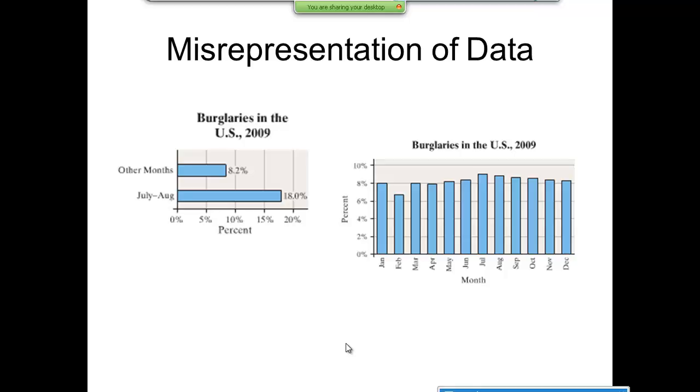It indicates every other month is 8.2 percent. If we look at the real data over here on the right-hand side, you see all the other months except for July and August roughly are 8.2 percent on average. But during July and August, those added together give you 18%.